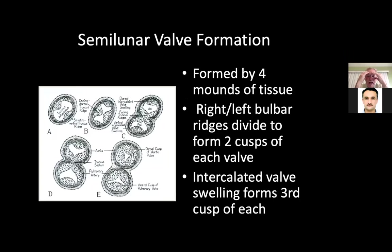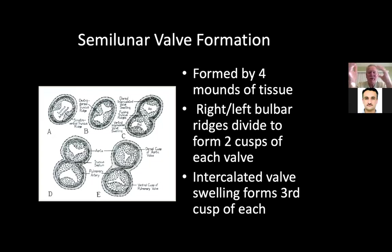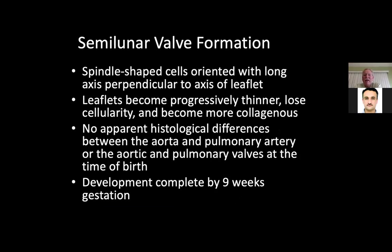Semilunar valve formation: they're formed by four mounds of tissue. Right and left valvular ridges divide into two cusps of each valve, and the intercalated valve swelling forms the third cusp of each valve. The spindle-shaped cells are oriented with a long axis perpendicular to the axis of the leaflet, and the leaflets become progressively thinner — they lose their cellularity and become more collagenous, essentially becoming fibrous tissue.